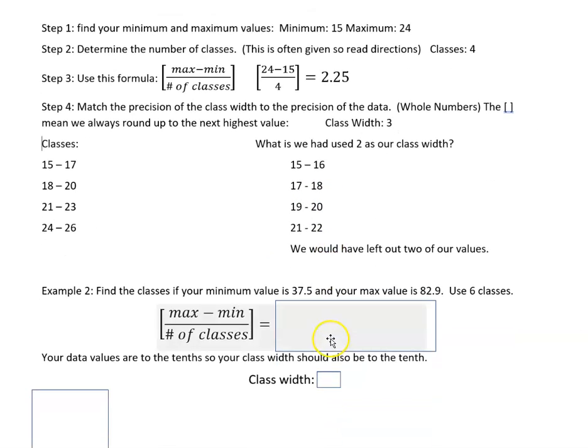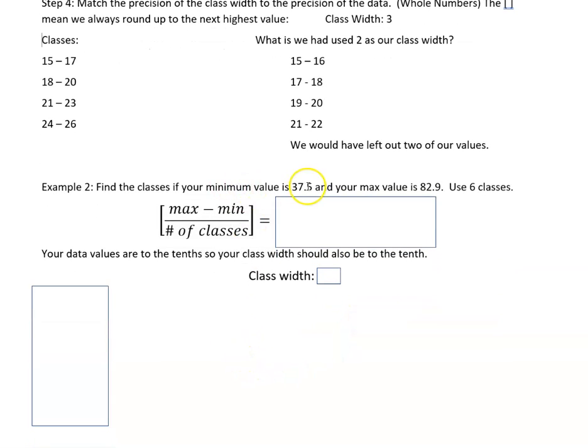Alright, very quickly a second example. I'm not going to show you the data set, but let's say that your minimum value is 37.5 and your max value is 82.9, and you want 6 classes. So you're going to plug those numbers in: the maximum minus the minimum divided by the number of classes. And what I get here rounded off is 7.567, but your values that you're given are to the tenths place, so your class width should also be to the tenth. If I round that, I'm going to go up to 7.6. Remember, even if this was 7.51, I would still have gone up to 7.6, but this one rounds actually like correctly like we would assume.